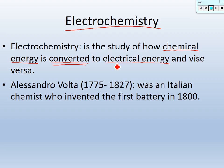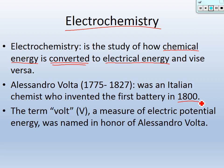Alessandro Volta was an Italian chemist who invented the first battery in 1800. It's been a little over 200 years, and battery technology has gotten so much better since then — it's really changed the world. The term 'volt' comes from Alessandro Volta's last name. It's abbreviated with a capital V, and it's a measure of electric potential energy named in his honor. A AA battery, for example, has an electric potential energy of 1.5 volts.